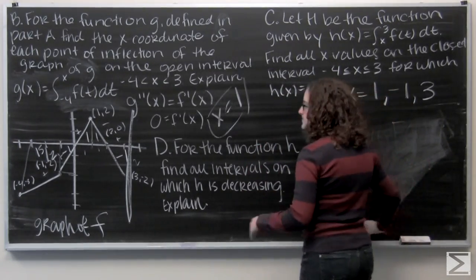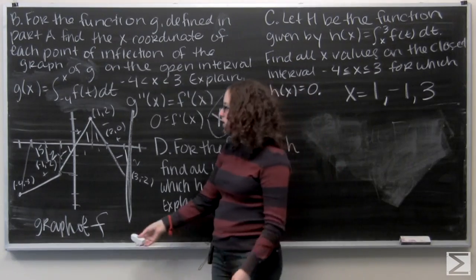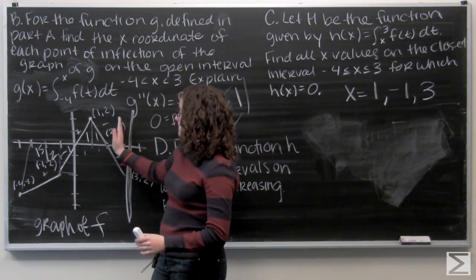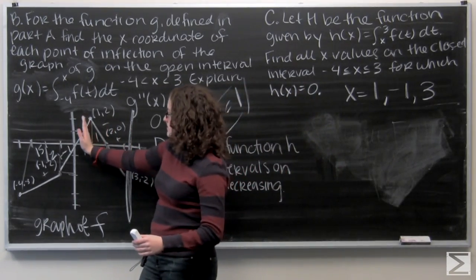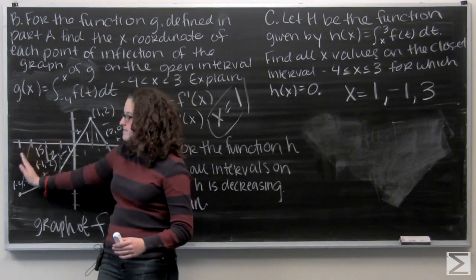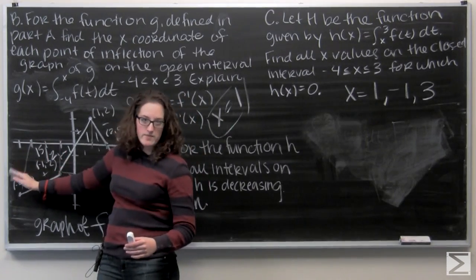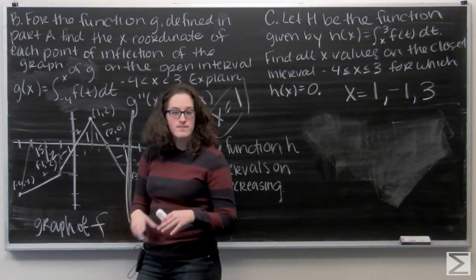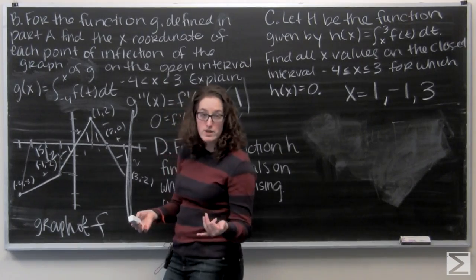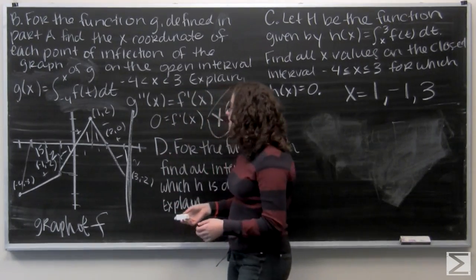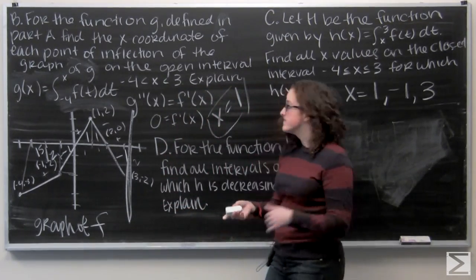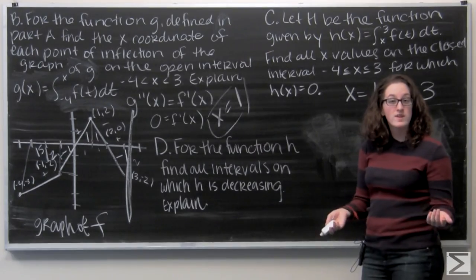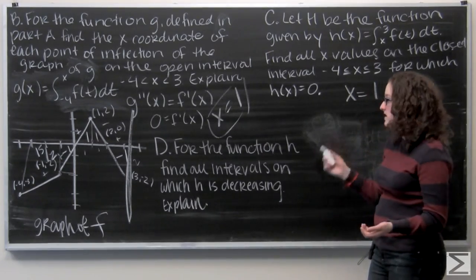Continuing to negative four: from negative one I have zero, then add one, then zero, then fifteen halves — so there's nothing that cancels back to zero beyond x equals negative one. Therefore my three answers for part c are x equals negative one, x equals one, and x equals three.